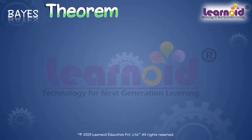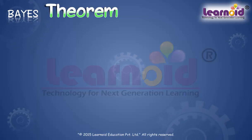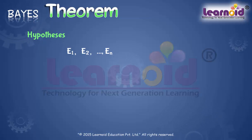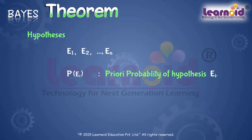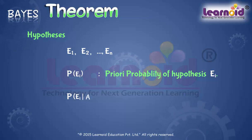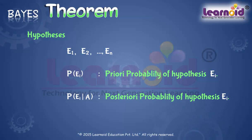We will use the following terminologies when applying Bayes' Theorem. Events E1, E2, and so on up to En are called hypotheses. The probability P(Ei) is called the priori probability of hypothesis Ei. The conditional probability P(Ei|A) is called the posteriori probability of hypothesis Ei.